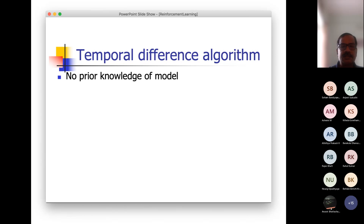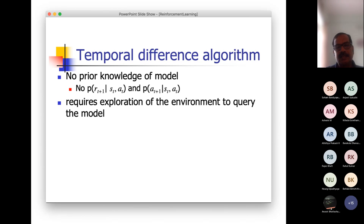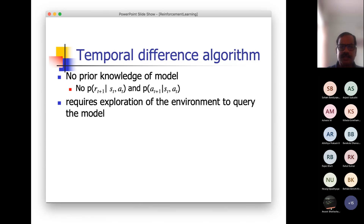Now we will consider the other scenario when there is no prior knowledge of the model. That means you do not have the probability distributions for rewards and state transitions given the state-action pair. When we discussed the very simple model of the K-arm bandit problem, there is only one state and you are choosing a lever. You can get a probabilistic reward given some action — there is a probability distribution, so the reward may not be deterministic.